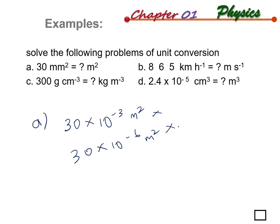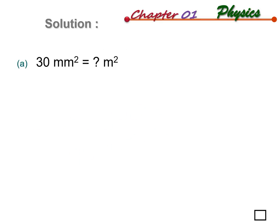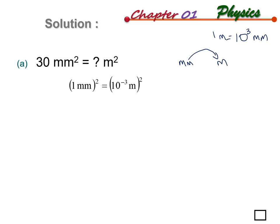Now we will go through which one is correct. For 30 millimeter square into meter square, we look at the conversion: 1 meter is equivalent to 1000 millimeters, that is 10 to the power of 3 millimeters. So millimeter converts to meter by dividing by 1000, which is times 10 to the power of negative 3.